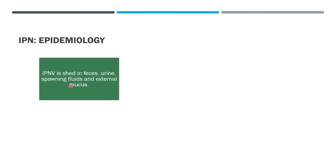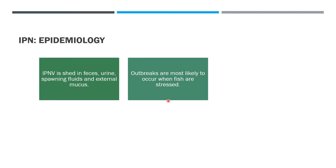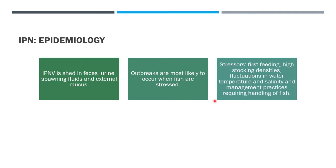IPNV is shed in the feces, urine, spawning fluids, and external mucus. Outbreaks are most likely to occur when fish are stressed. Stressors that increase the severity of the disease include first feeding, high stocking densities,